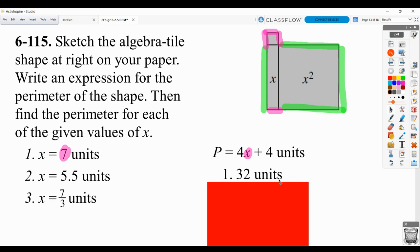Again, I've got just the answer, but you need to show some work. So you'd have 4 times 7 plus 4 would be 28 plus 4 or 32 units.